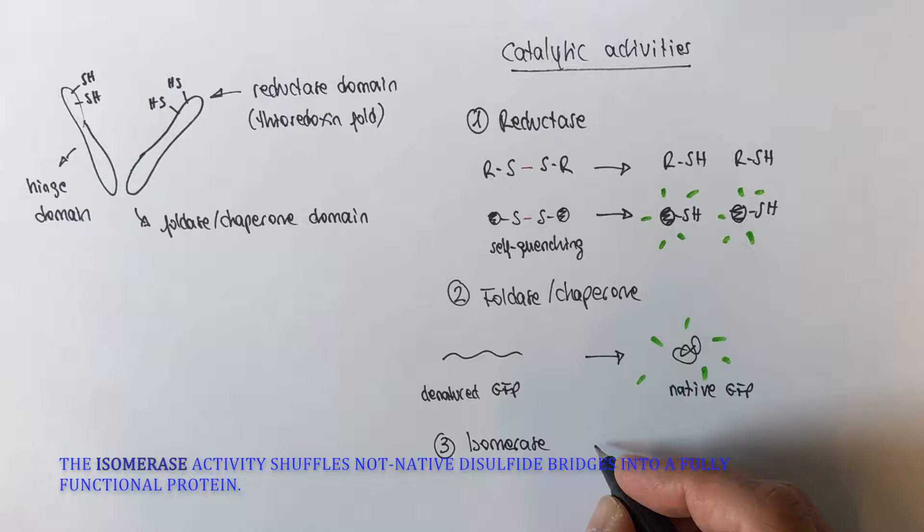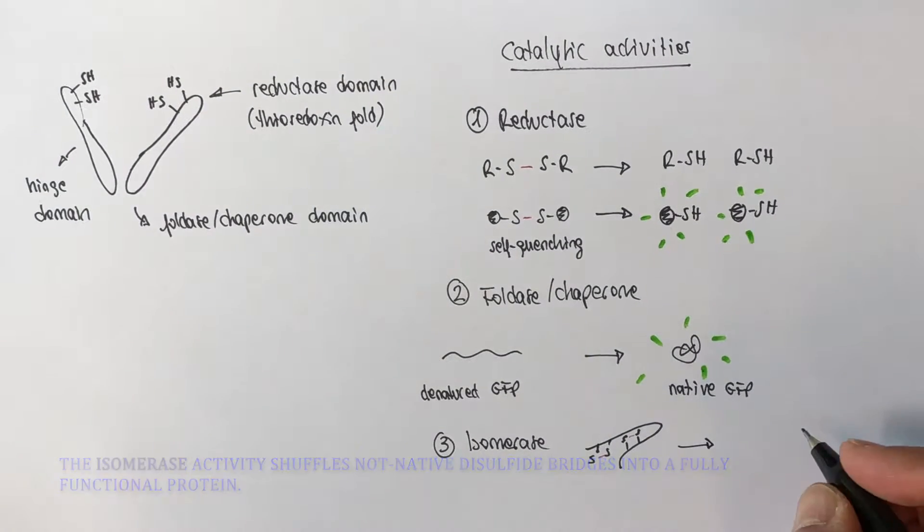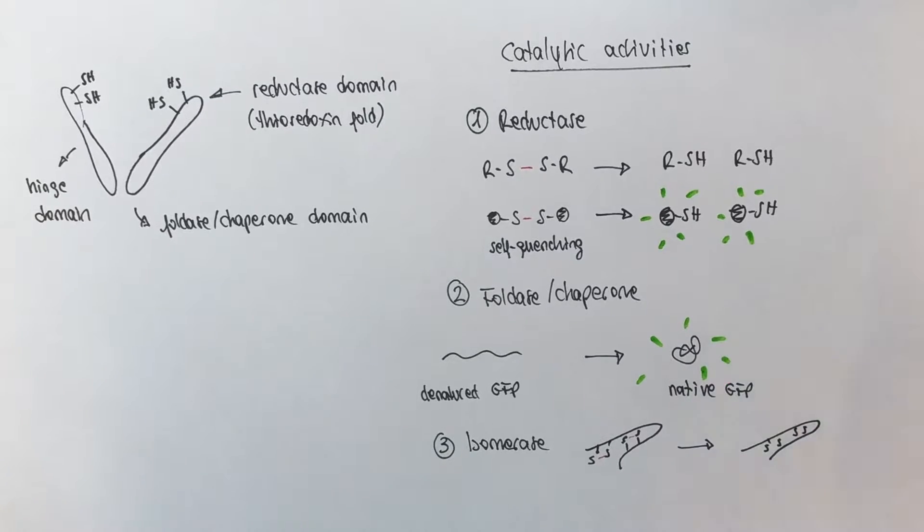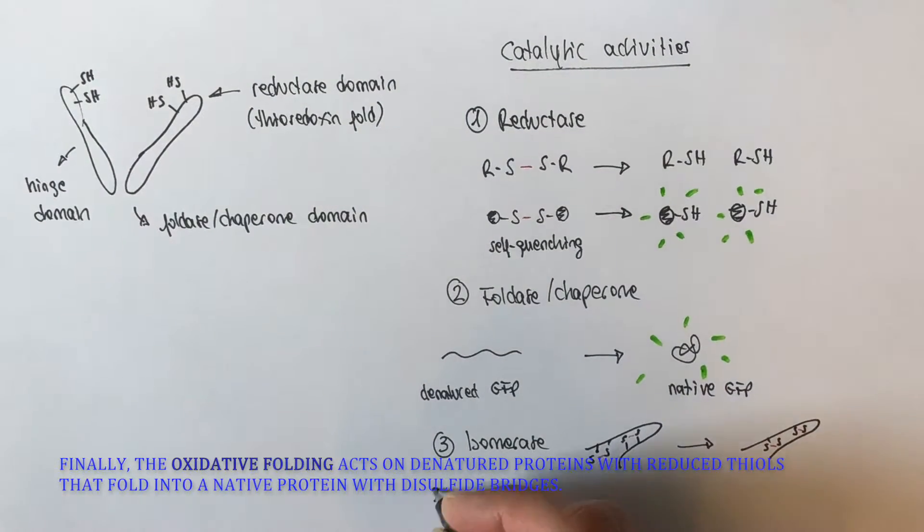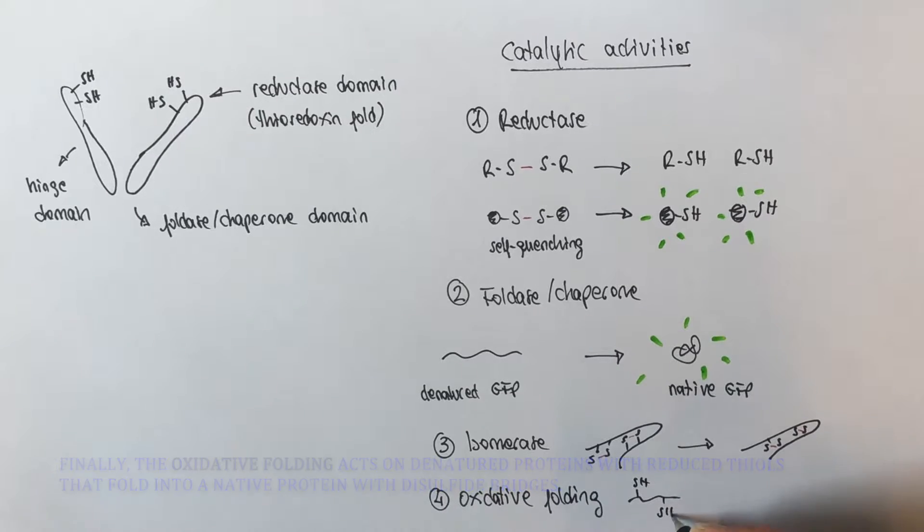The disulfide isomerase activity shuffles non-native disulfide bridges into a fully functional native protein. Finally, the oxidative folding acts on the native proteins where the cysteines fold into a native functional protein with disulfide bridges.